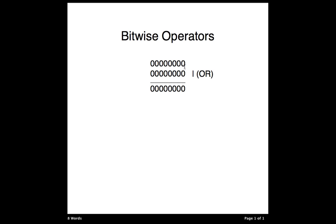The OR operator, in bitwise terms, compares the bits of individual columns to each other. Bitwise operators work like normal operators — they take two numbers and produce some output. For our example, let's say we have the value of 1 and the value of 2 in binary terms. We want to OR these numbers together, which means we compare every bit column of each number.